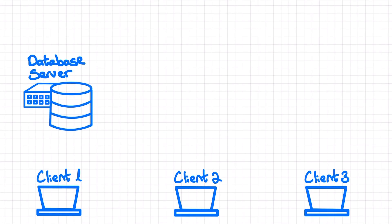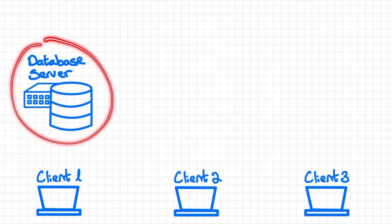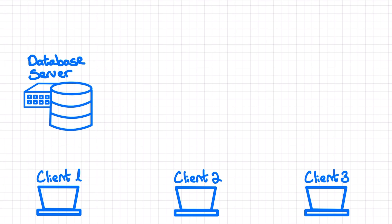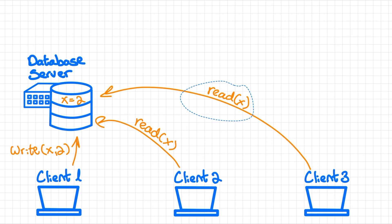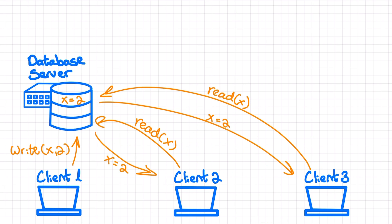Let's look at an example. Let's say we have this database server that stores all the data for our website food.com, and we have this piece of data x that lives on the server and its value is 1. Because there is only one copy of x, at any given moment the server will hold the most up-to-date value of it. A user can modify the value of x and every read request that comes after that will return the same updated value. This is perfect in terms of consistency — every read request will always return the most up-to-date value.